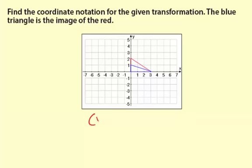So we could say x, y, map to, and the x values don't change. But what happens here is the y value, well, this triangle is half as tall. So that means the y value is going to be 1 half y.